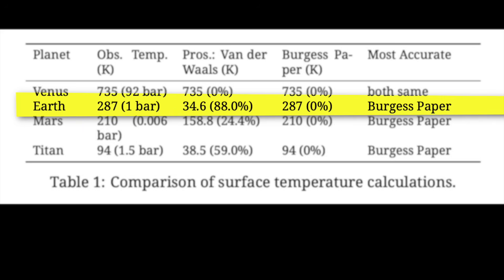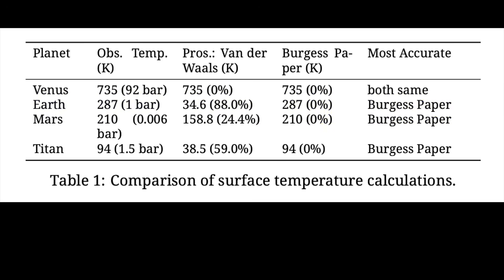Now let's take Earth. In the case of Earth, I actually had the better estimate — the van der Waals was completely out. The reason is it fails when you're not under high compression, which Earth hasn't got. So in all the other cases — whether it be Earth, Mars, or Titan, with its methane — my results were far better than the van der Waals results. What I predicted for all four planets gave better temperature estimates than the prosecution, in effect.